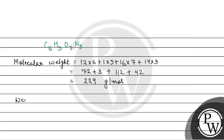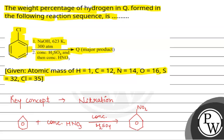Now if we calculate the weight percentage of hydrogen: hydrogen count is 3, upon molecular weight 229, multiplied by 100. This gives approximately 1.31 percent.